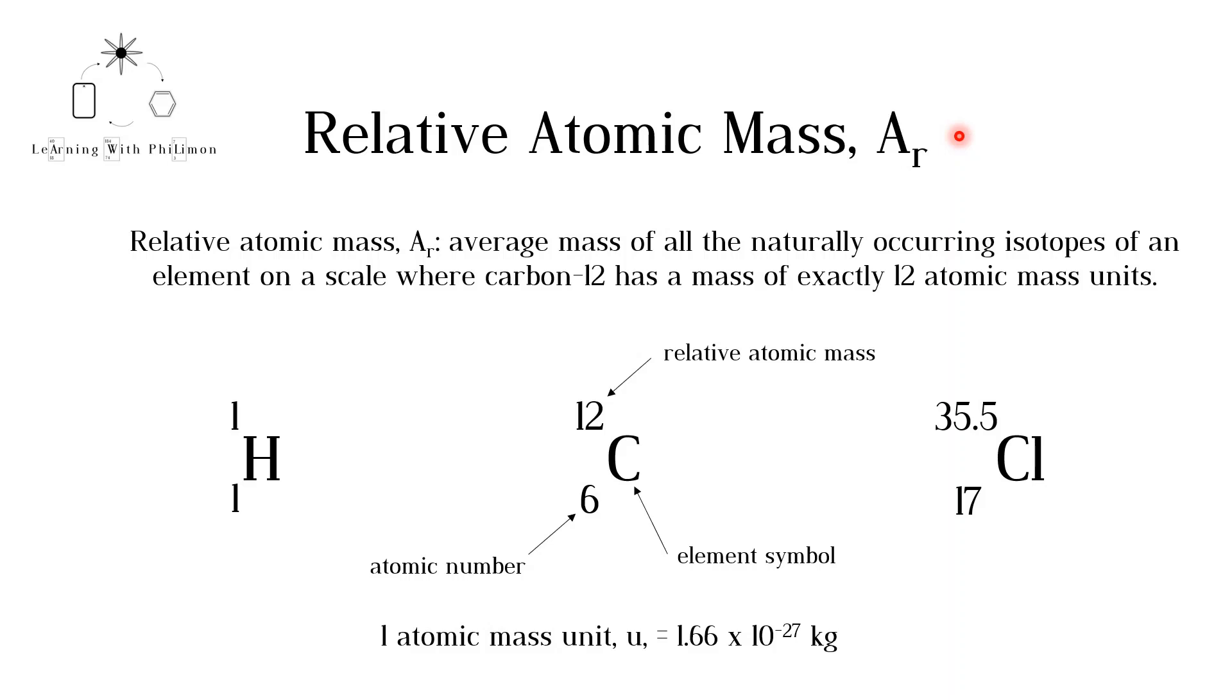In the atomic structure videos, we learned that every element has a different number of protons, electrons and neutrons. The number of neutrons and protons in the nucleus of an atom affects the mass of the atom. Remember that the mass of an electron is negligible.